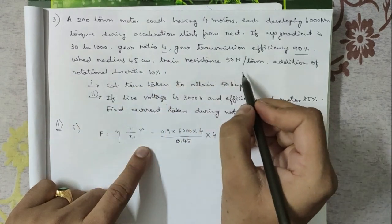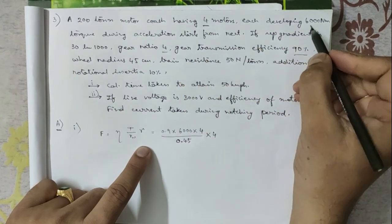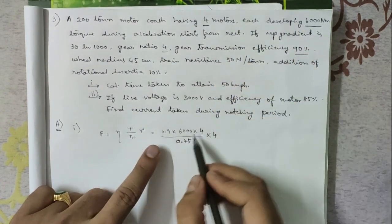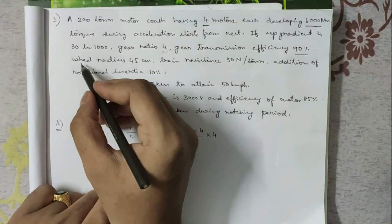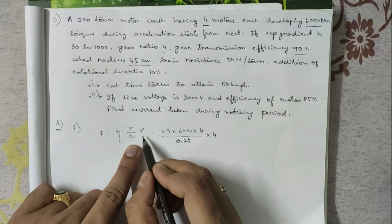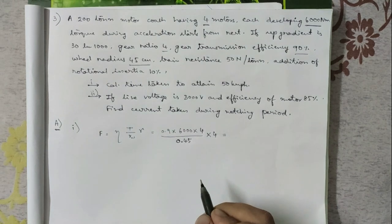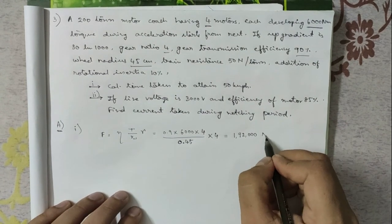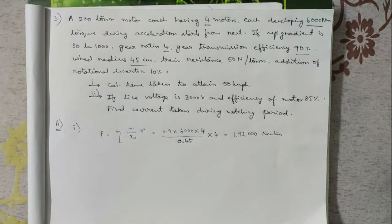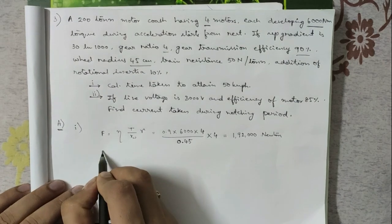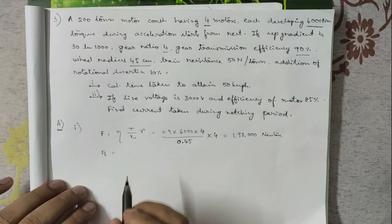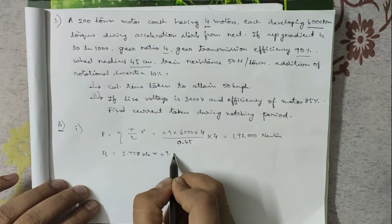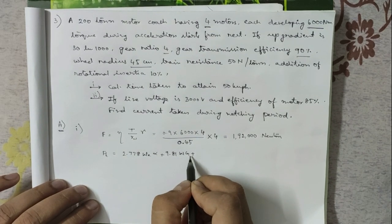Calculating this gives F = 192,000 N. We also calculate the tractive effort using the formula: Ft = 2.778·WE·α + 9.81·W·G + W·R, where WE is the effective weight incorporating the 10% rotational inertia addition, W is 200 tons, G is the gradient, and R is the train resistance.